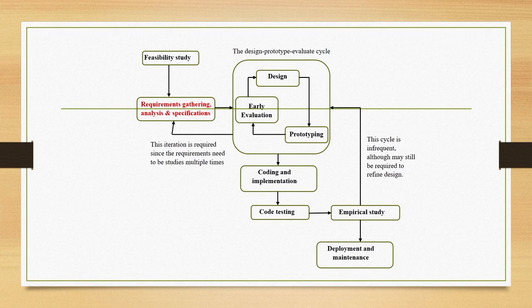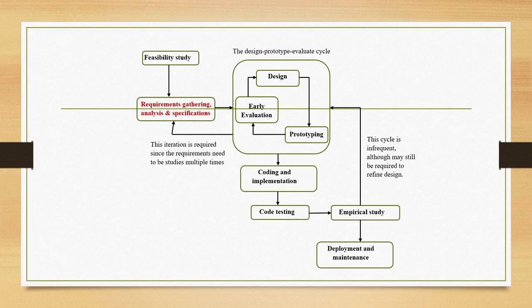We are concerned about the design as well as implementation of interactive systems, in other words human computer interfaces. As we have seen in earlier lectures, human computer interfaces or interactive systems are distinct from other software systems. In interactive systems, the primary concern is to make it easy to use for layman persons. This easy to use has a more formal notion which we call usability, which is a more standardized way of saying the same thing.